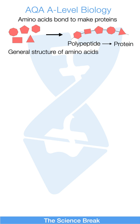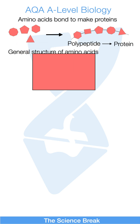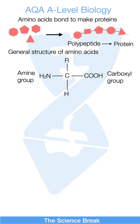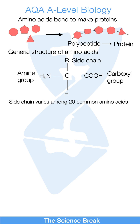The general structure of amino acids. Here is an amino acid. We have an amine group, a carboxyl group, and the R group, which is the side chain. The side chain varies among the 20 common amino acids.